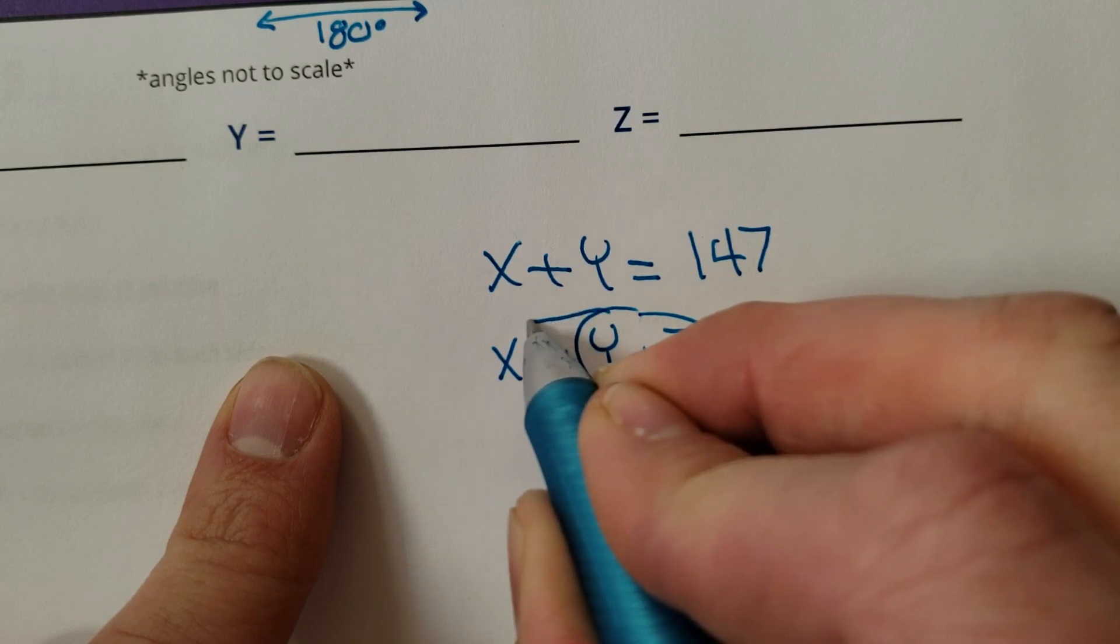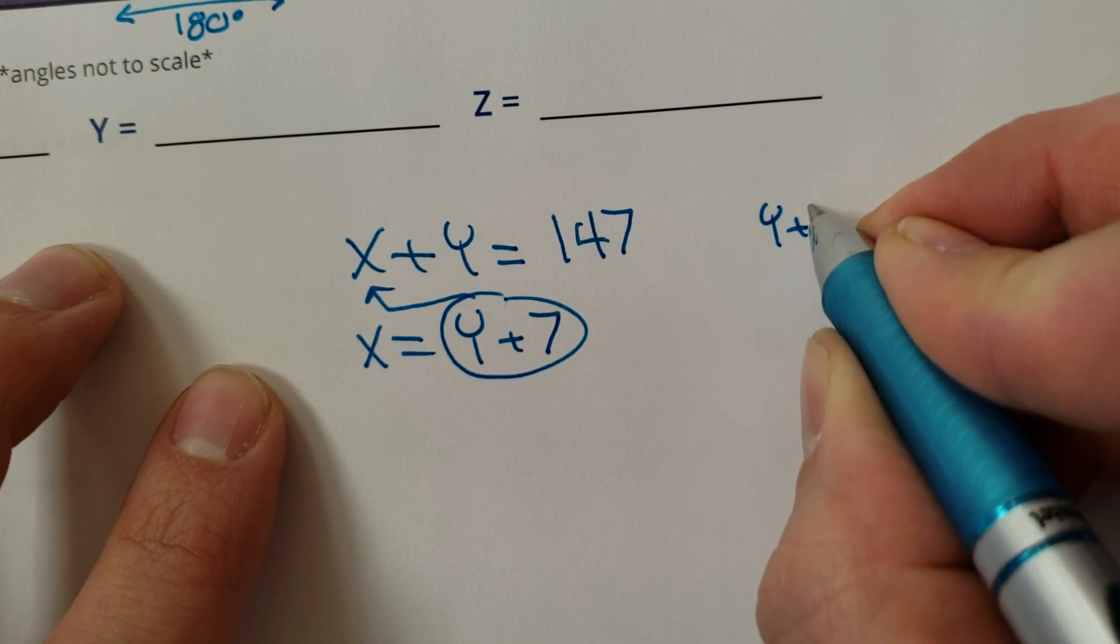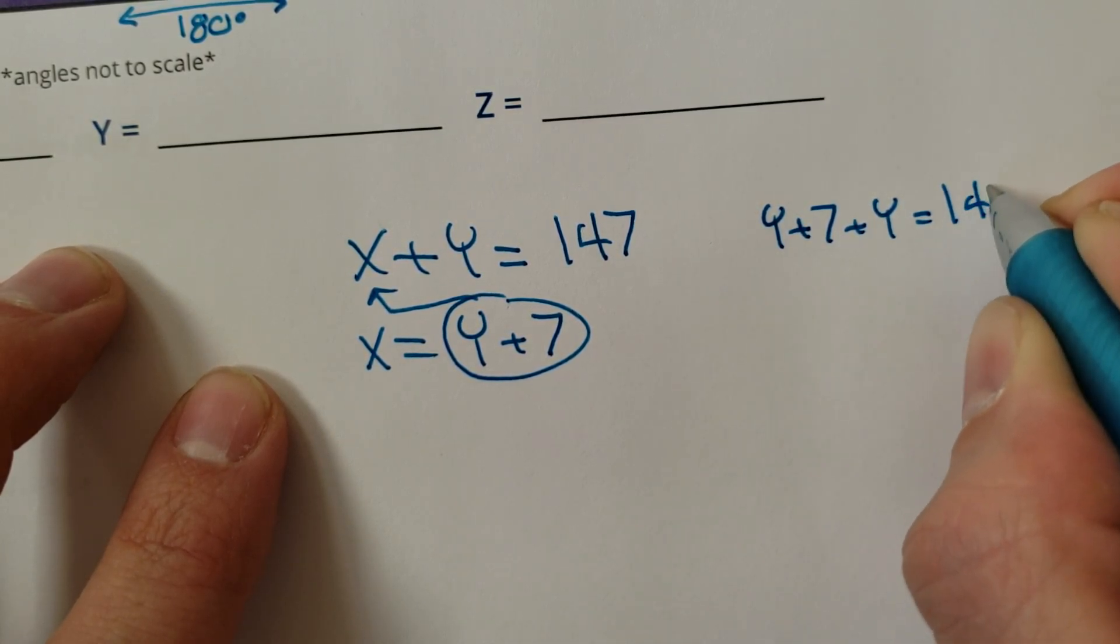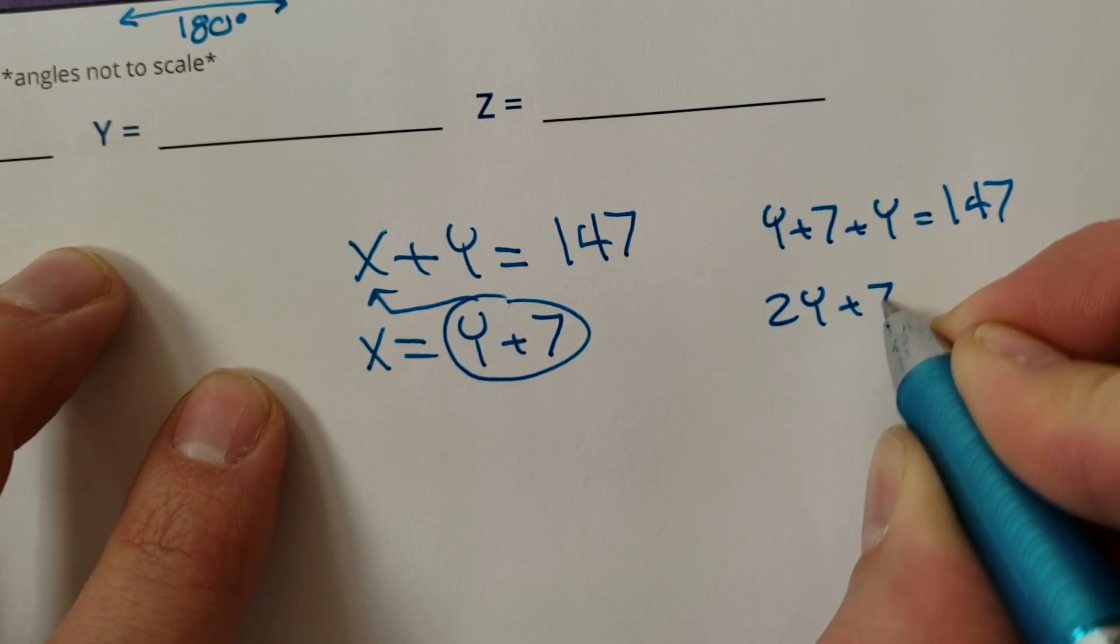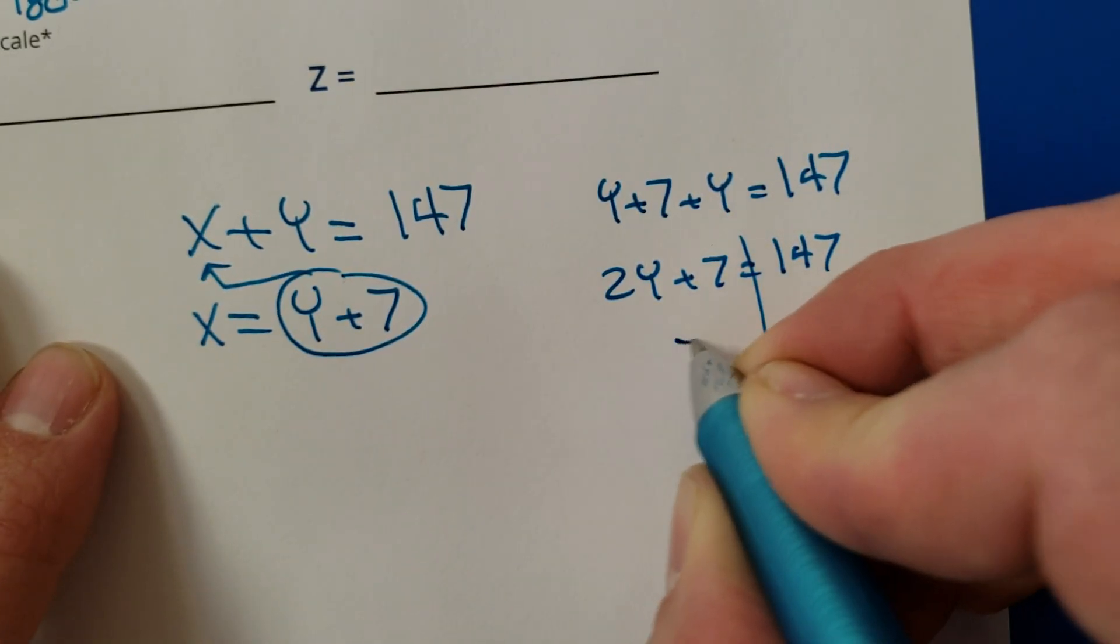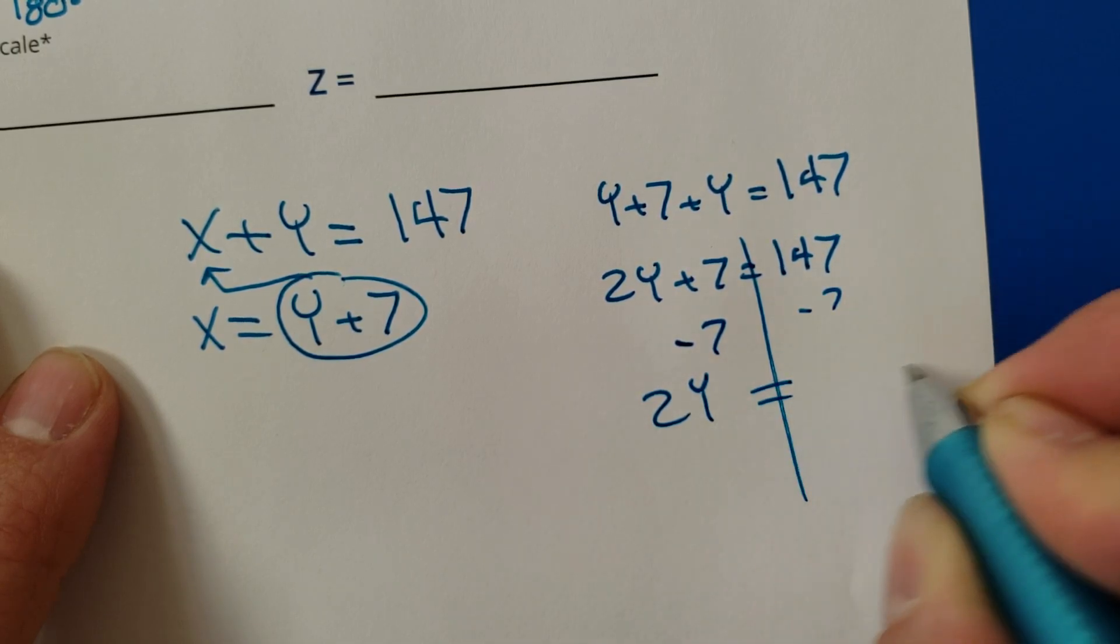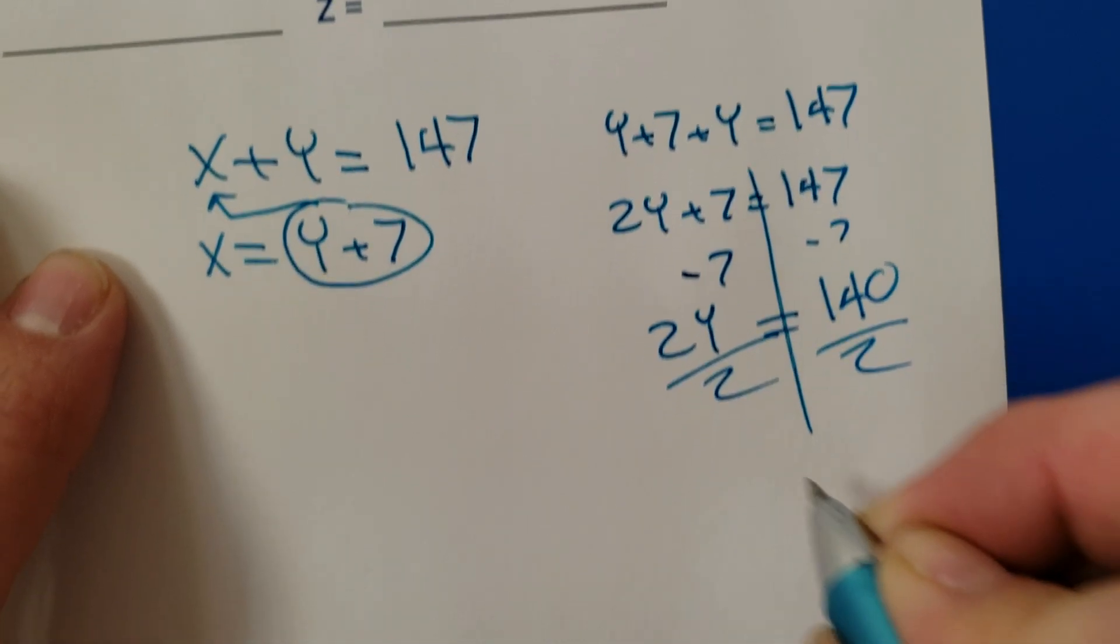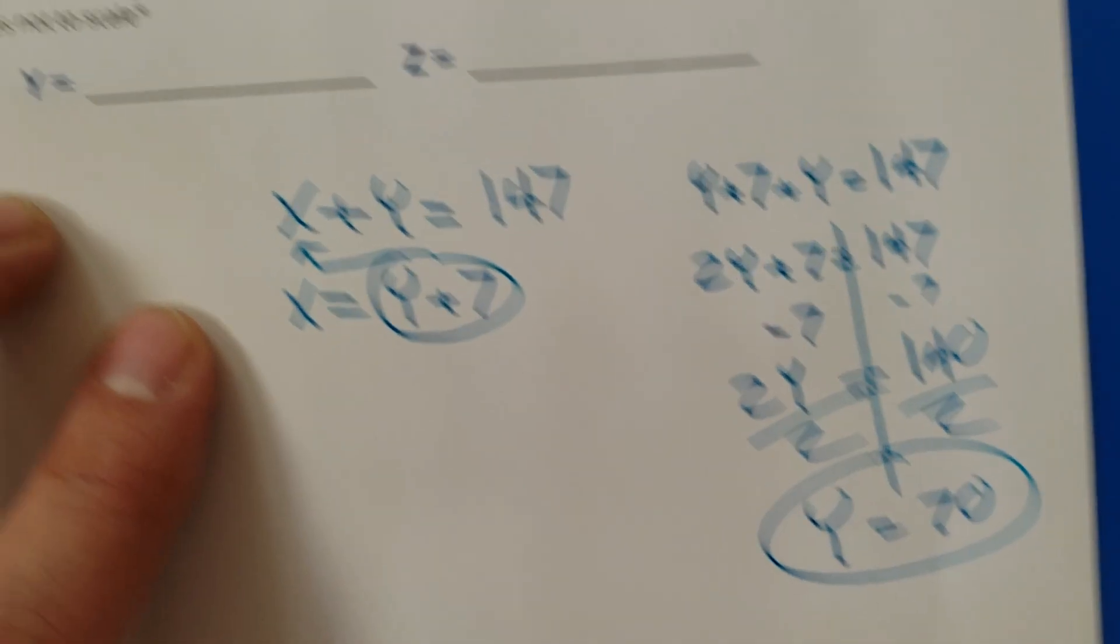Let's substitute X equals stuff. Stuff is going to go in for X, so rewrite: Y plus 7 plus another Y is going to equal 147. Rewrite: 2Y plus 7 is going to equal 147. Now we can do some algebra. Minus 7 minus 7, 2Y is going to equal 140. Divided by 2 divided by 2, Y is going to equal 70.